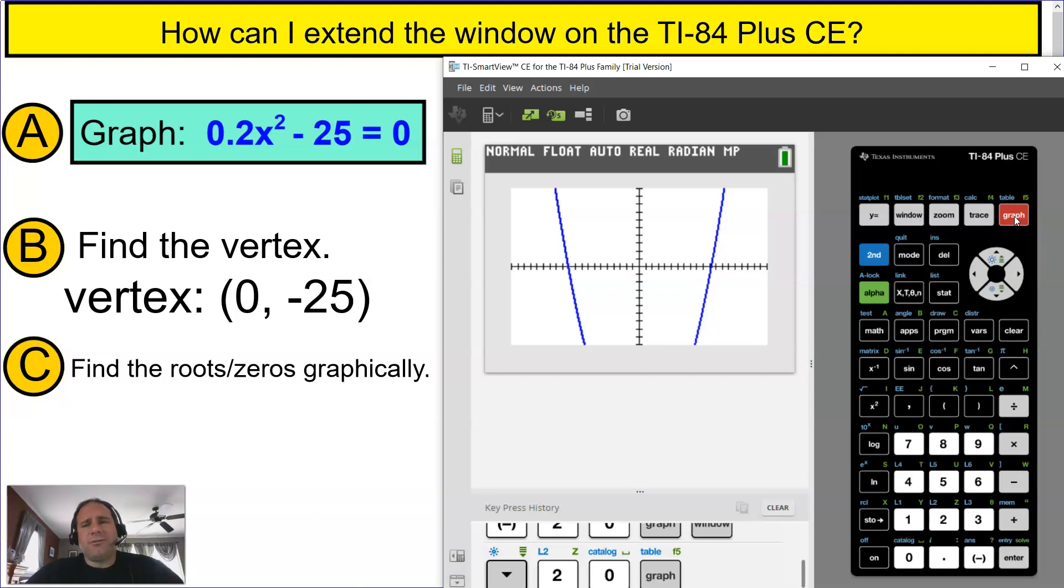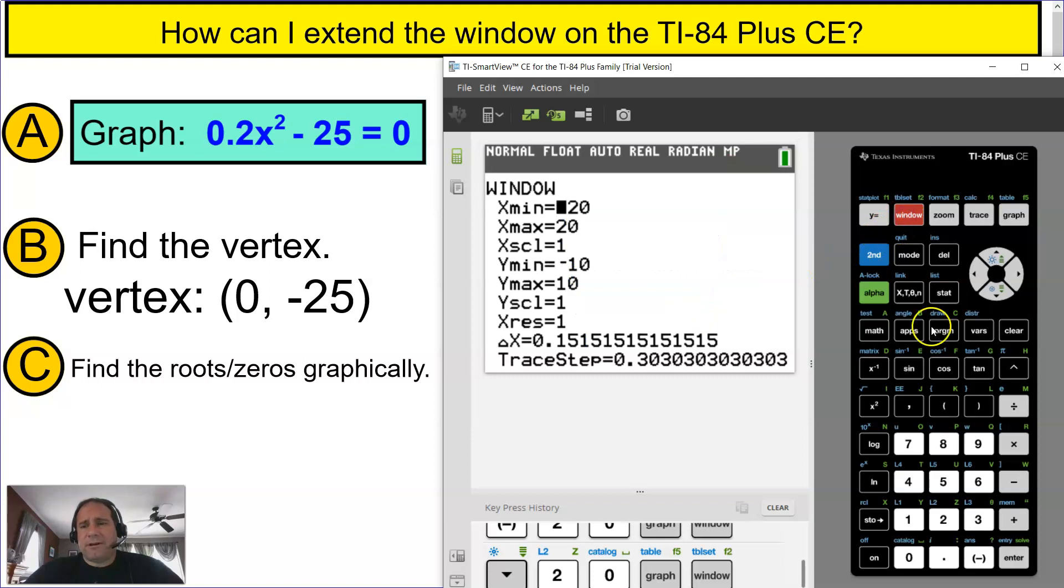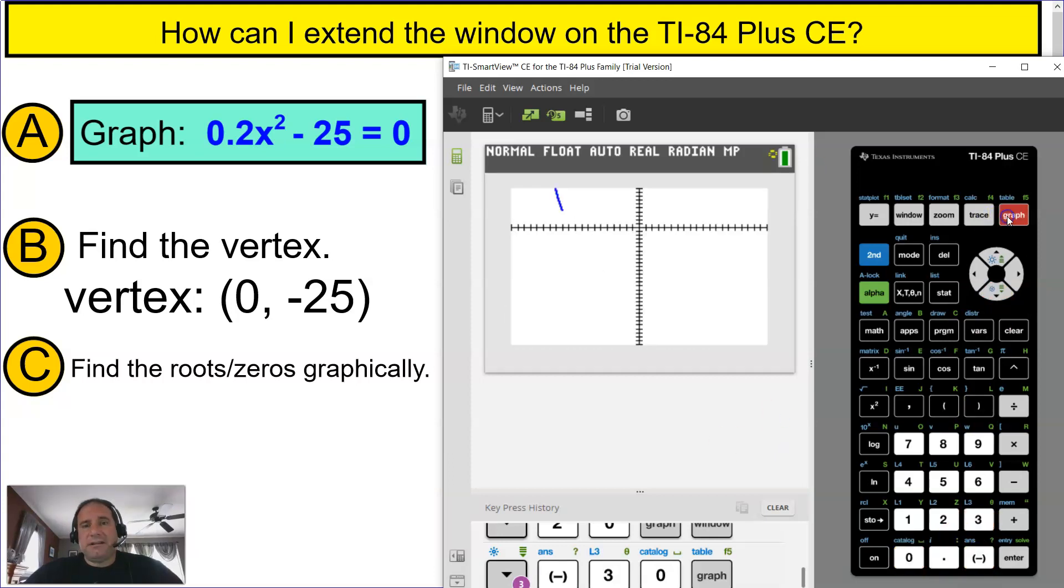And remember, I really don't need the extension of the y-min because I don't really need it. But I could put it back if I wanted to go down to y-min and do negative 30 again. I would see as much of the parabola as I really need with the vertex and the zeros crossing the x-axis.